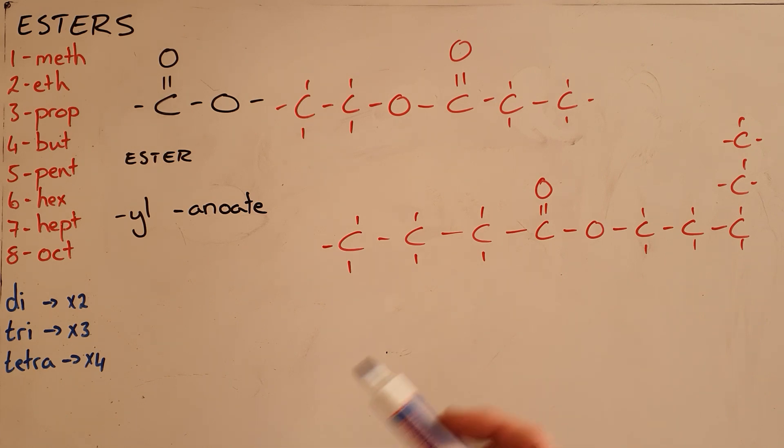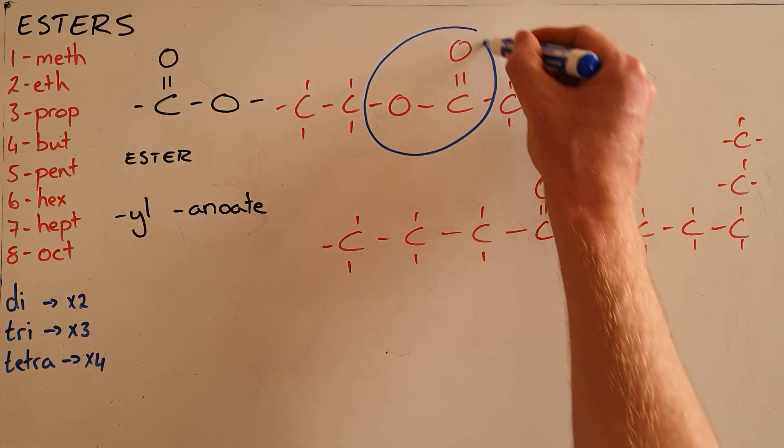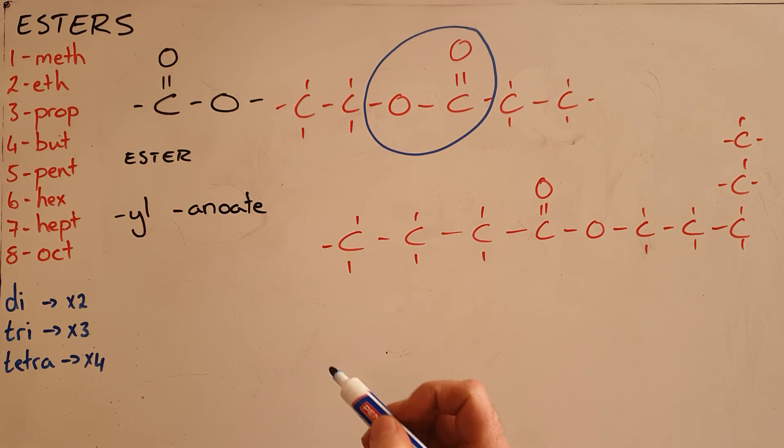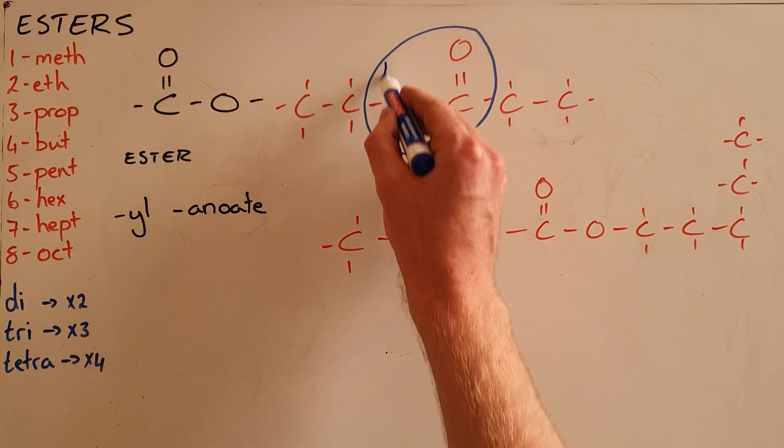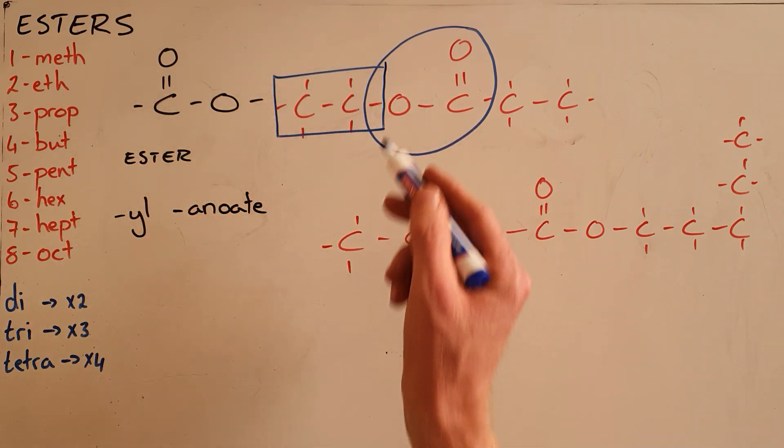The first thing you need to do is identify the ester functional group when naming a molecule. We can see that this is broken up into two parts. There is one part of this molecule that is attached only by a single bond to the oxygen.